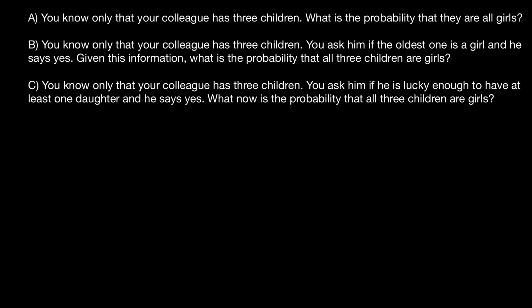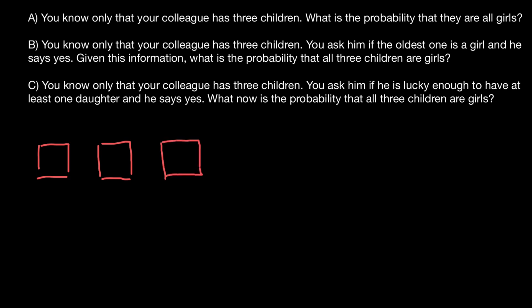Here's the first problem, A. You know only that your colleague has three children. What is the probability that all of them are girls? Imagine that each box represents a child — first box is the first child, second box is the second child, and third box is the third child. What is the probability that the first child is a girl? There are two variants: it can be a girl or a boy, and the chances are equal. So the probability of a girl is one half, or 50%, or 0.5.